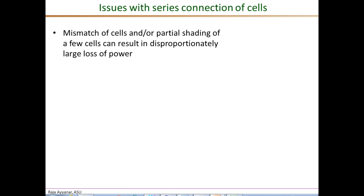So far in this video we have been assuming that each of the PV cells connected in series have identical cell characteristics and experience identical levels of solar irradiance. But in practice this is almost never the case, and there are several issues associated with the series connection of PV cells.